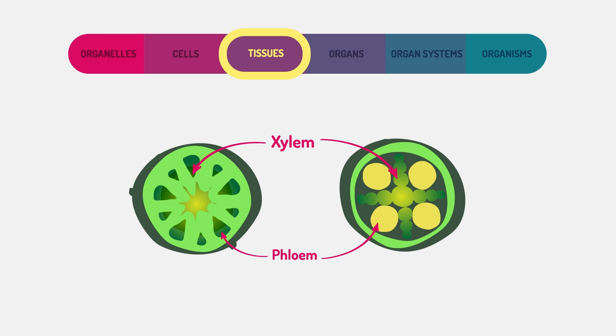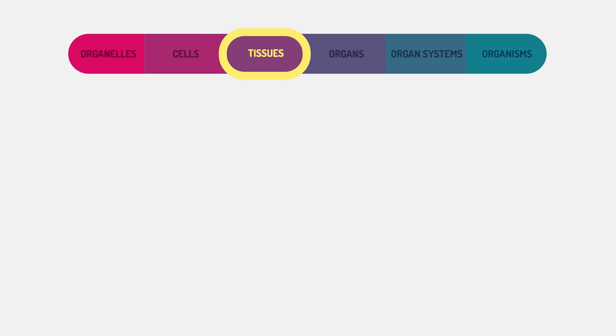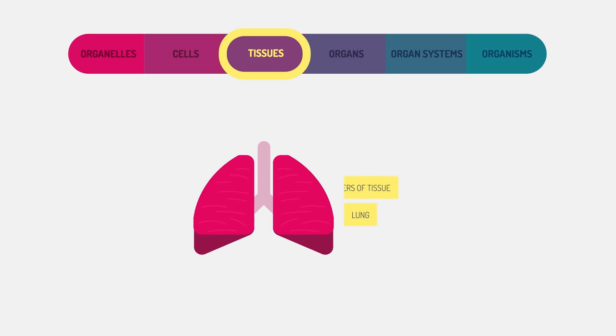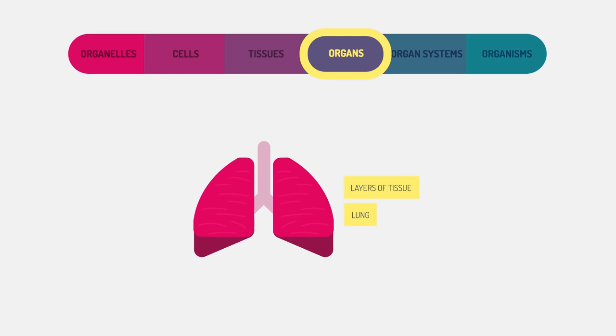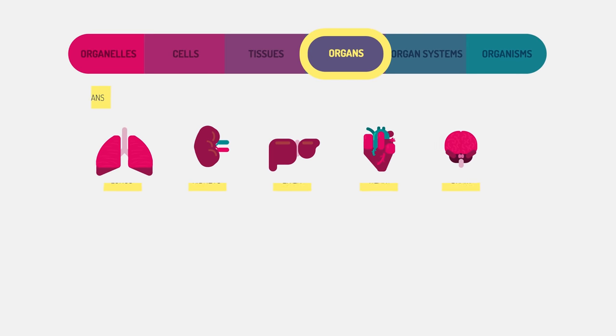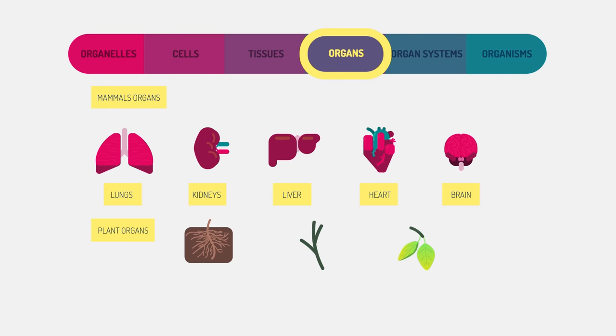When there are layers of tissue working together, they form an organ. Organs are specialized to carry out specific life processes. Animals contain organs. In fact, mammals have five vital organs that they cannot live without.